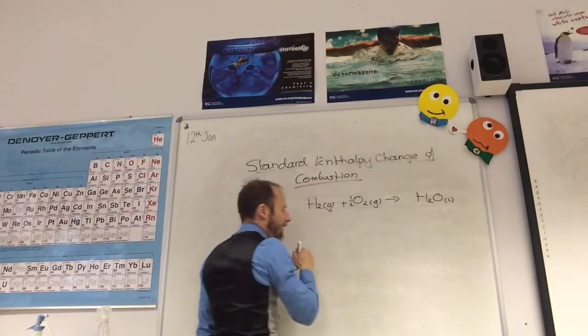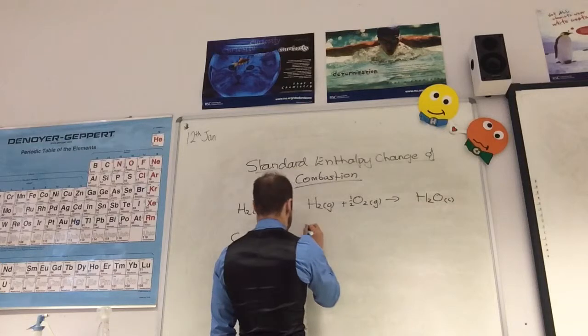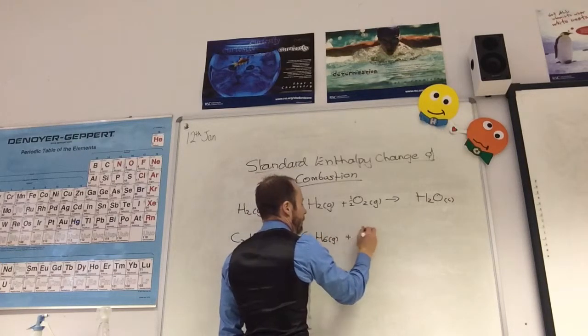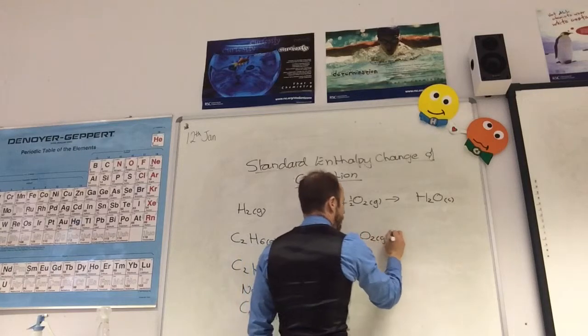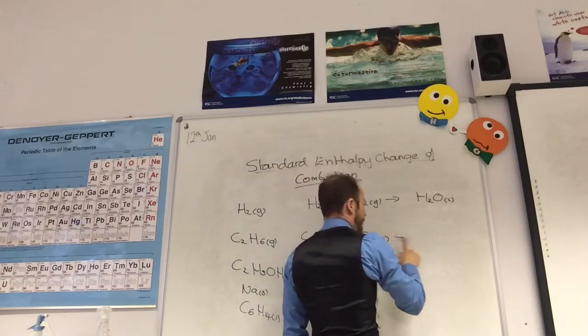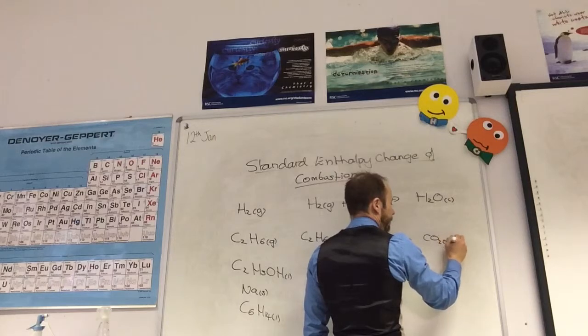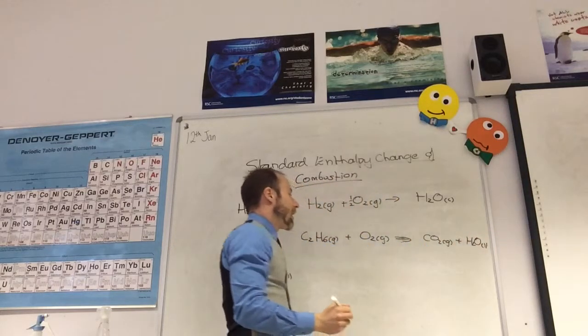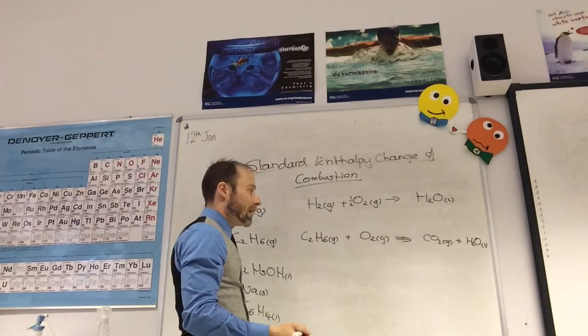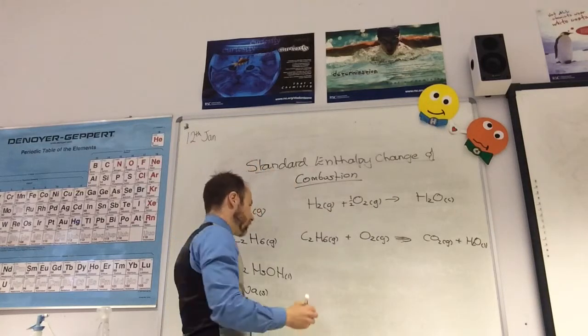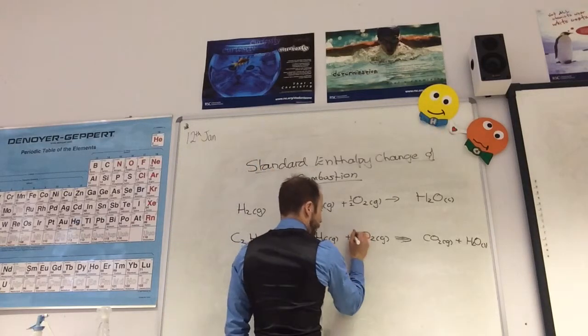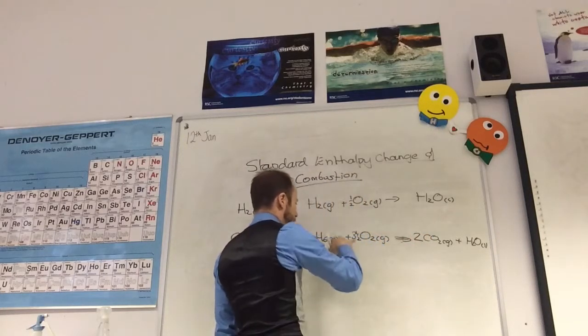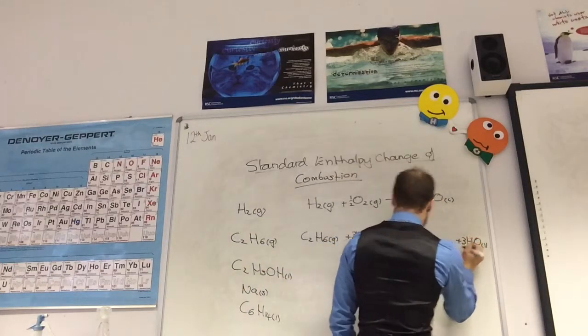So ethane. I'm going to get C2H6 gas, plus O2 again. That's going to give me CO2 as a gas, and H2O as a liquid. Balancing? Any ideas? Three and a half O2. Yep. And then two there, three there. Brilliant.